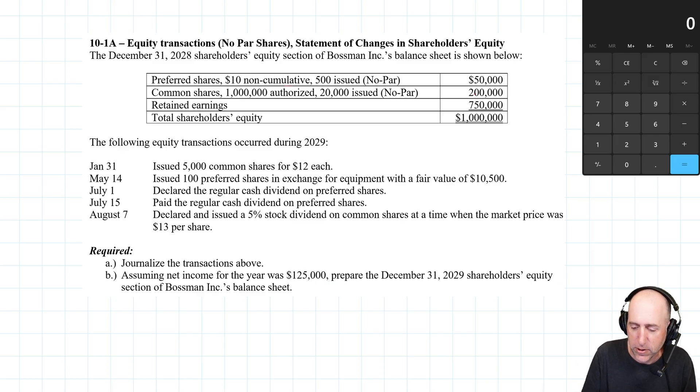But why would I prefer the common shares? Well, the common shareholders have access to the retained earnings. The retained earnings are thought of as belonging to the common shareholders. So when I buy stock in Microsoft or Apple, I'm looking for common shares, generally speaking.